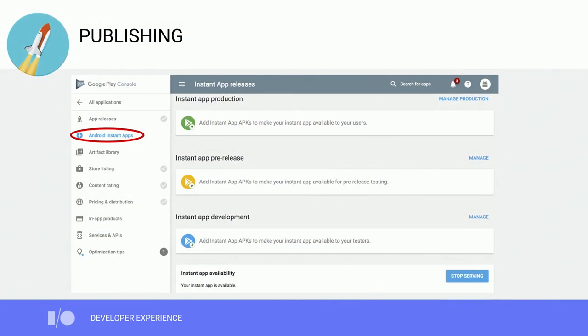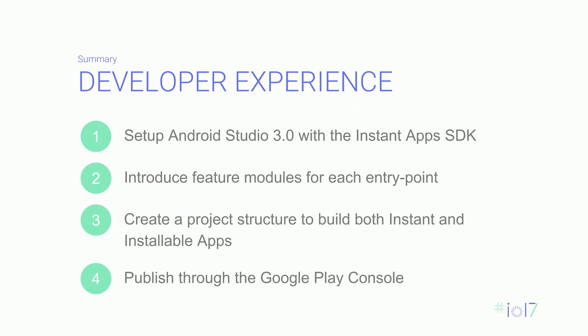Finally, when your Instant App is ready, you can use the Google Play Console for publishing. We've enabled three publishing tracks — development, pre-release, and production — for you to roll out your Instant App in a phased manner. To quickly summarize the developer experience: set up Android Studio 3.0 with the Instant Apps SDK; introduce feature modules and refactor your app into them, with a feature module for each entry point; create a project structure that builds both Instant App and installable app from the same Studio project; and publish through the Google Play Console.